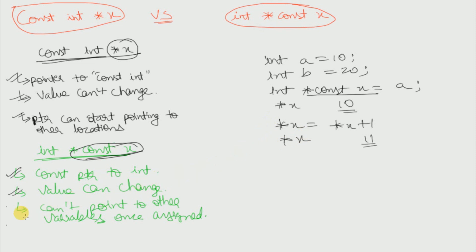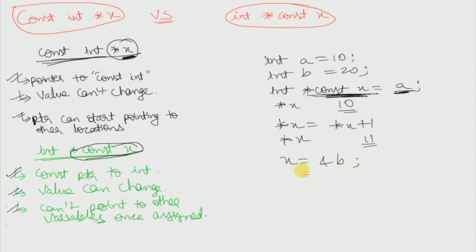The third point is we cannot point to other variables once x has been assigned a variable, because x is a constant pointer. Unlike in our previous case where x was only a pointer pointing to a constant integer, this is the opposite case — x is a constant pointer pointing to an integer. We cannot change once it has been assigned to variable a, so we cannot write `x = &b` when x has already been assigned a.